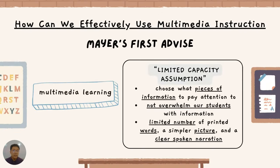So how can we effectively use multimedia in our instruction? Richard Mayer presented two pieces of advice. The first is the limited capacity assumption, where students choose what pieces of information they need to pay attention to. As teachers, we need to not overwhelm them with information that is too long, because students' attention spans nowadays are shorter.